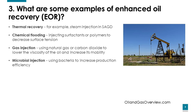What are some examples of enhanced oil recovery? Thermal recovery, for example steam injection or SAGD. Chemical flooding — injecting surfactants or polymers to decrease surface tension. Gas injection — using natural gas or carbon dioxide to lower the viscosity of oil and increase its mobility. Microbial injection — using bacteria to increase production and efficiency.